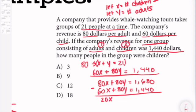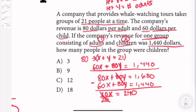80y minus 80y is 0, so 20x equals 240. Dividing by 20, x equals 12.